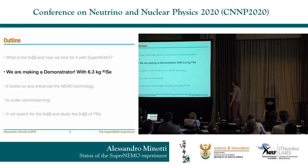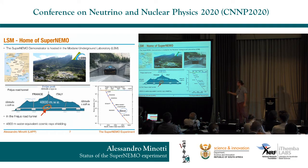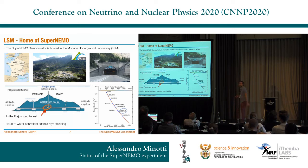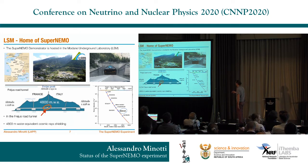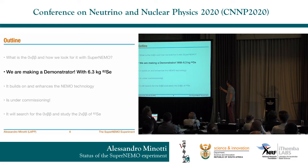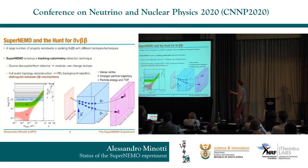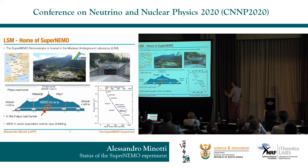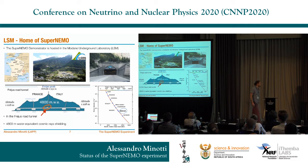The SuperNEMO demonstrator is being built in Modane. This is where the detector is located — in the LSM Modane Underground Laboratory on the border between France and Italy. The laboratory itself is inside the highway tunnel that connects the two countries, roughly in the middle of the tunnel, where we can profit from the mountain to shield us from muons. LSM is one of the best laboratories in terms of shielding, with 4,800 meters water equivalent of shielding.